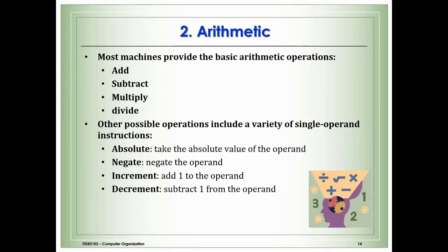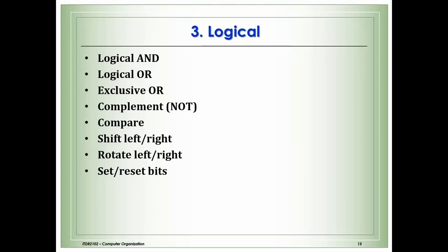Arithmetic operations: most processors provide add, subtract, multiply, and divide. Other possible operations include single-operand instructions such as absolute value, negate (give the negative value), increment (add one to the operand), and decrement (subtract one). Logical operations include AND, OR, exclusive OR, complement (NOT), compare, shift left/right, and rotate left/right. You can also set or reset bits.